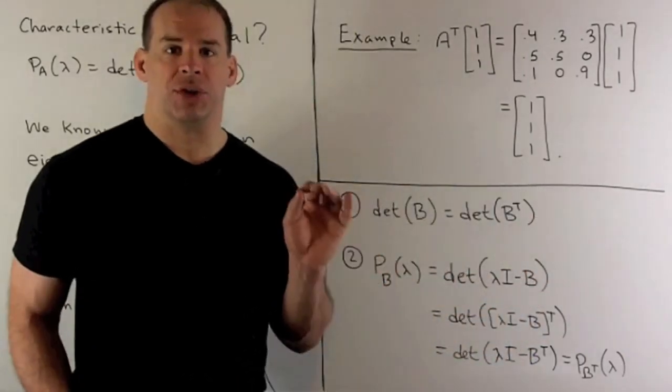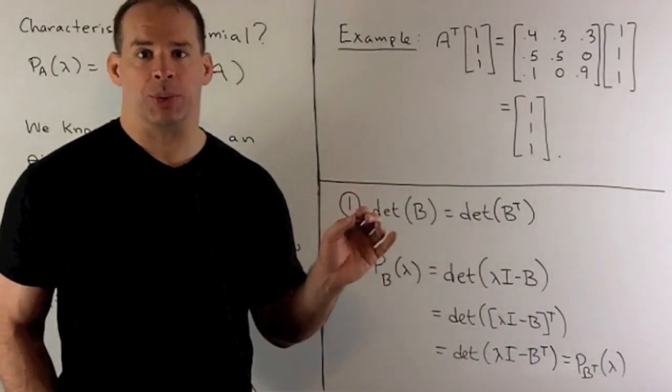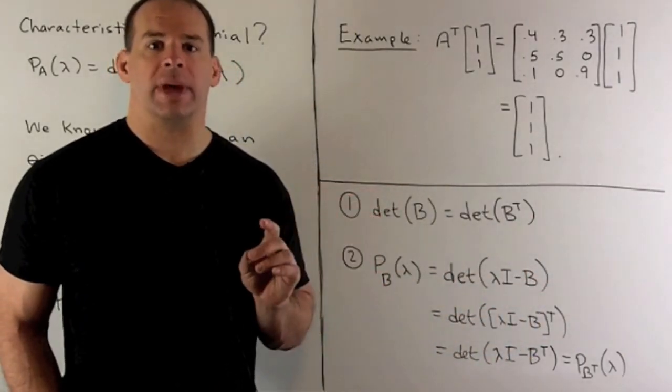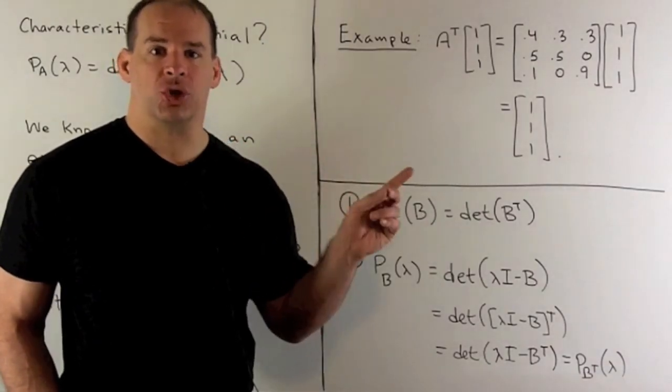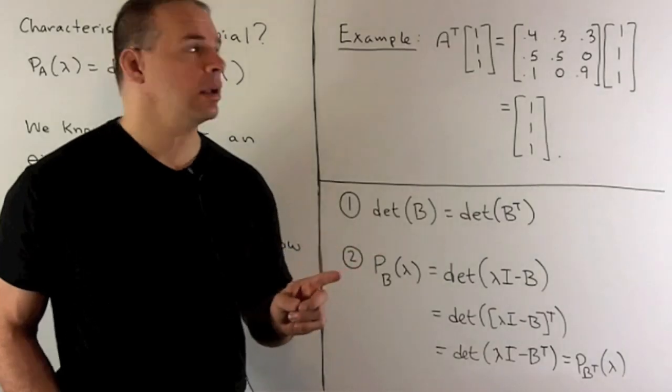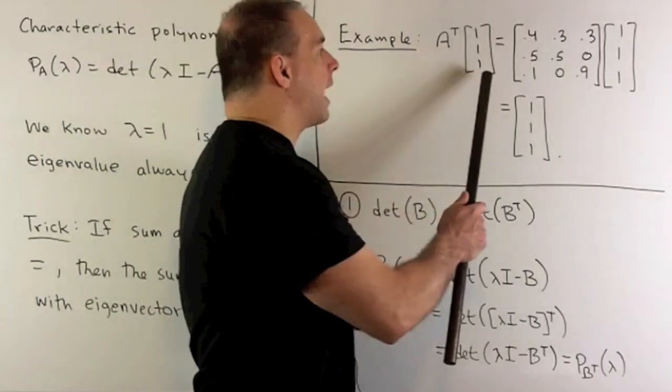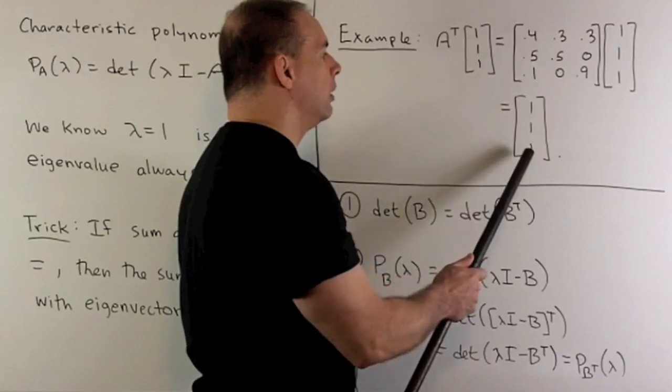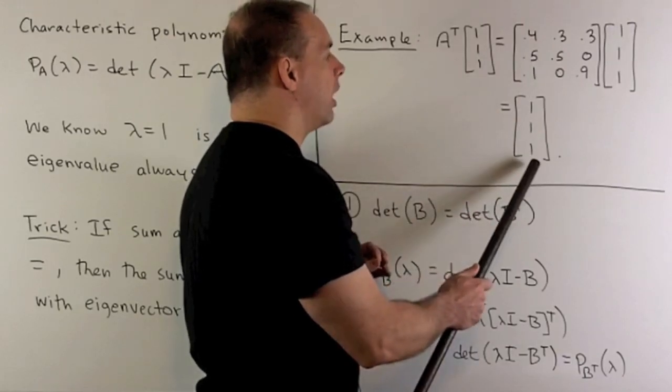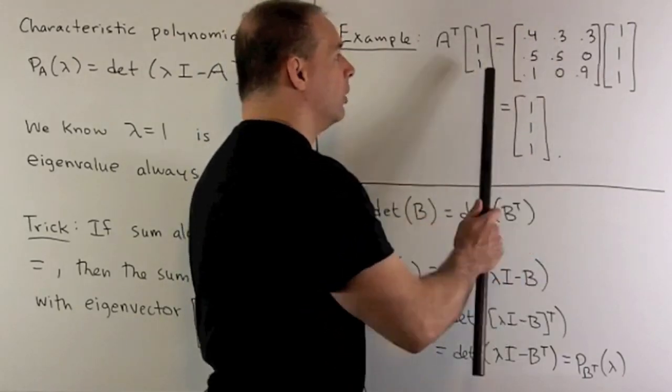For an example, consider our matrix A. I take its transpose. Before we had sum along the columns was equal to 1. So, I take the transpose, sum along the rows is going to be equal to 1. We work it out. Then you note (1, 1, 1) goes to (1, 1, 1). So, we have an eigenvalue equal to 1. Sum along any row is equal to 1.